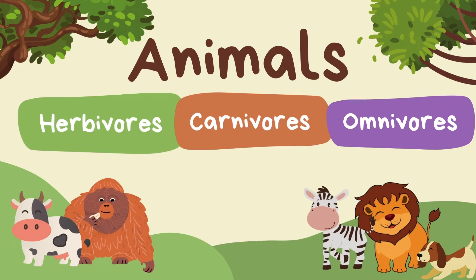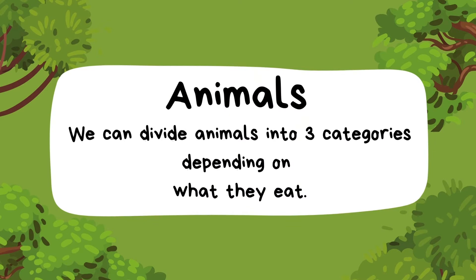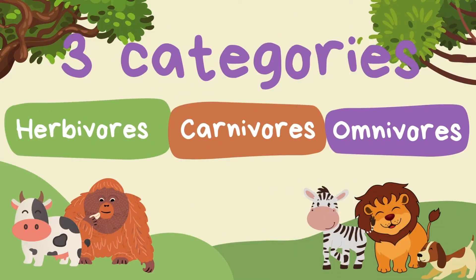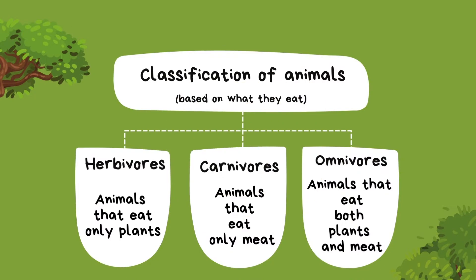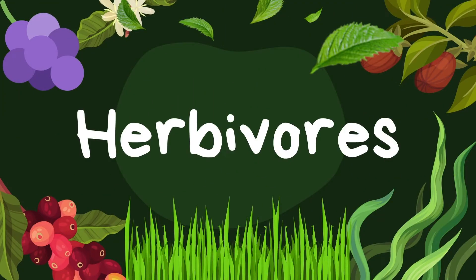Animals: herbivores, carnivores, and omnivores. We can divide animals into three categories depending on what they eat. Herbivores are animals that eat only plants. Carnivores are animals that eat only meat. And omnivores are animals that eat both plants and meat.